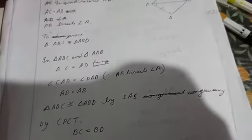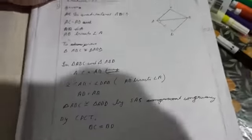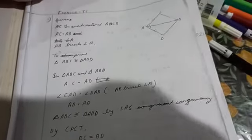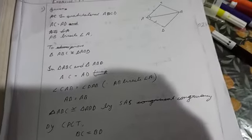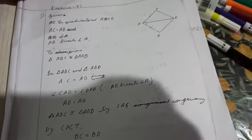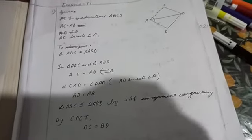By CPCT — corresponding parts of congruent triangles — the remaining sides left to be proved are BC and BD. Therefore, by CPCT, BC is equal to BD.